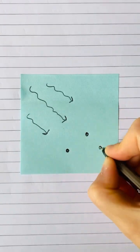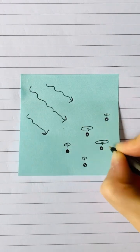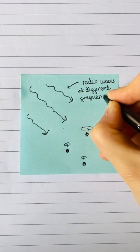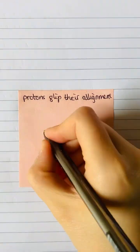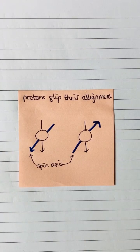Radio frequency coils transmit pulses of radio waves at different frequencies to the body. The protons wobbling at the same frequency absorb the waves and are excited, flipping their alignment with the magnetic field.